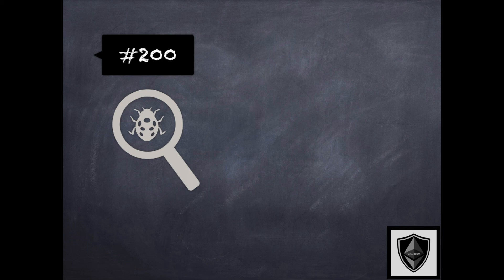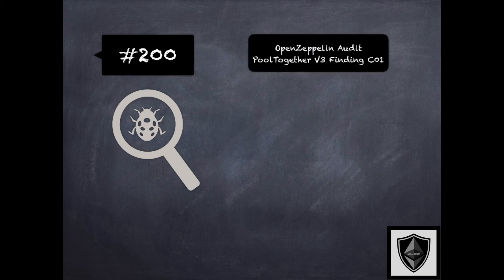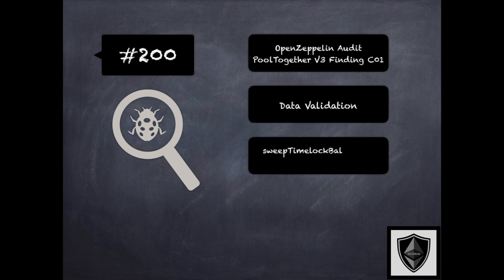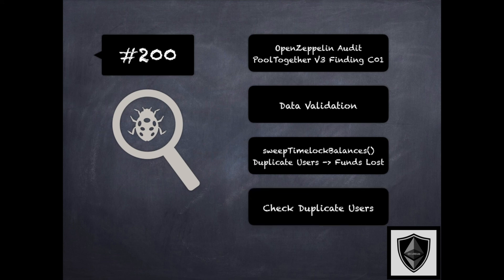Finding 200 is a finding from OpenZeppelin's audit of PoolTogether v3 protocol, where the concern was that funds could be lost. The sweep time-lock balances function accepted a list of users with unlocked balances to distribute. However, if there were duplicate users in the list, their balances would be counted multiple times while calculating the total amount to withdraw from the yield service, which could lead to loss of their funds. The recommendation was to consider checking for duplicate users when calculating the amount to withdraw. This is related to token handling in 159 and numerical and accounting issues in 170 and 171 of security pitfalls and best practices 201.